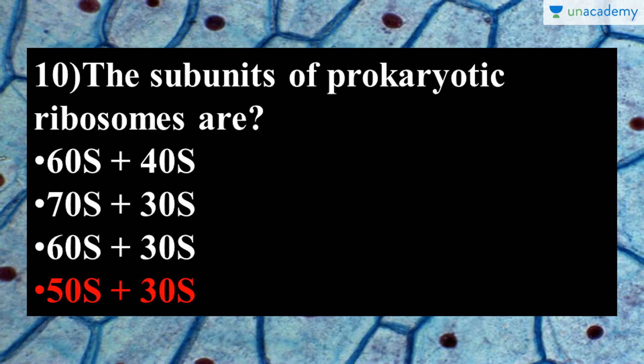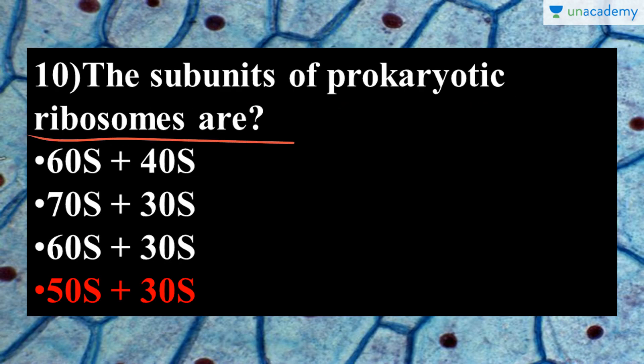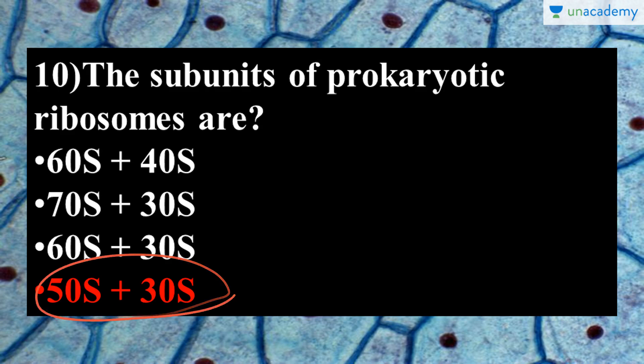The next question is: what are the subunits of prokaryotic ribosomes? Prokaryotic ribosomes are comparatively smaller and less complex than eukaryotic ribosomes. They have subunits of 50S and 30S, where S is the sedimentation coefficient.